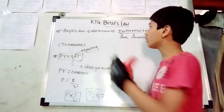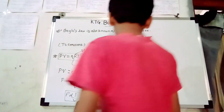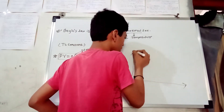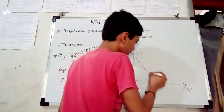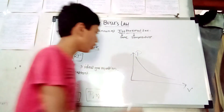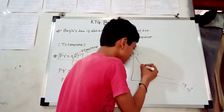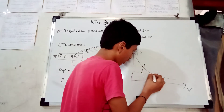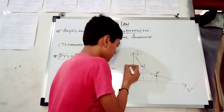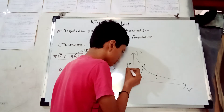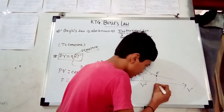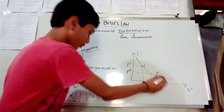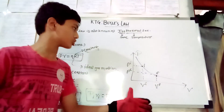Next we will study the graph of pressure and volume. Here is the pressure axis and here is the volume axis. There are two points on the graph — this is the initial point with V initial, and this is the final point with V final. From this graph we can conclude that pressure is inversely proportional to volume.